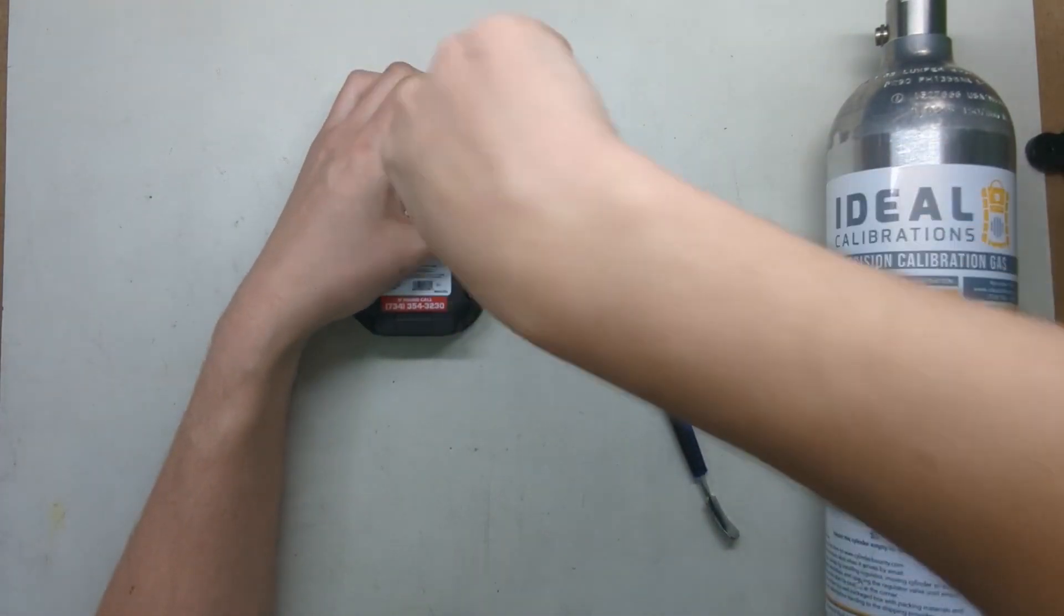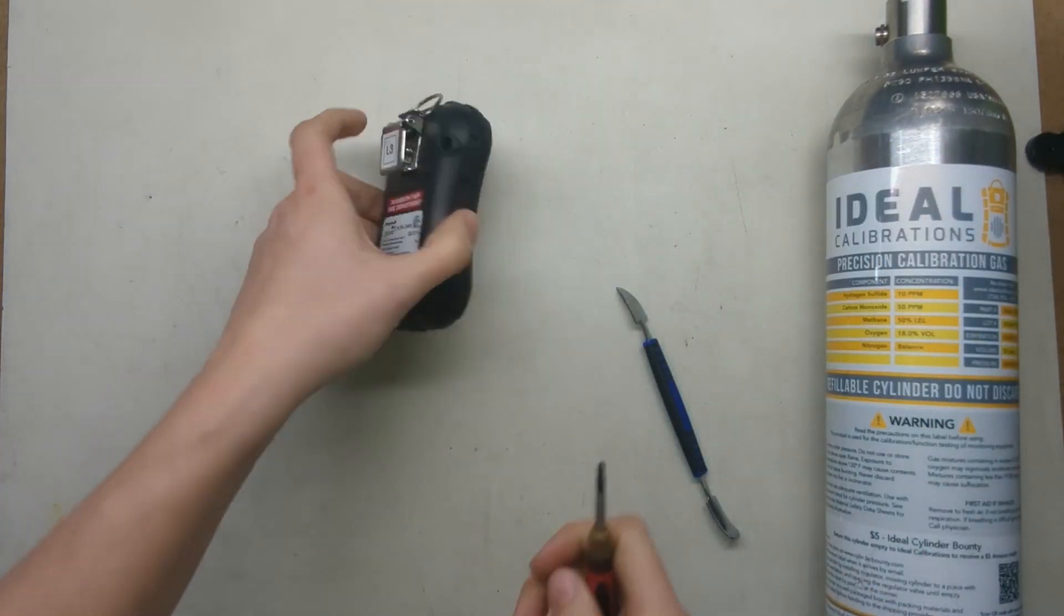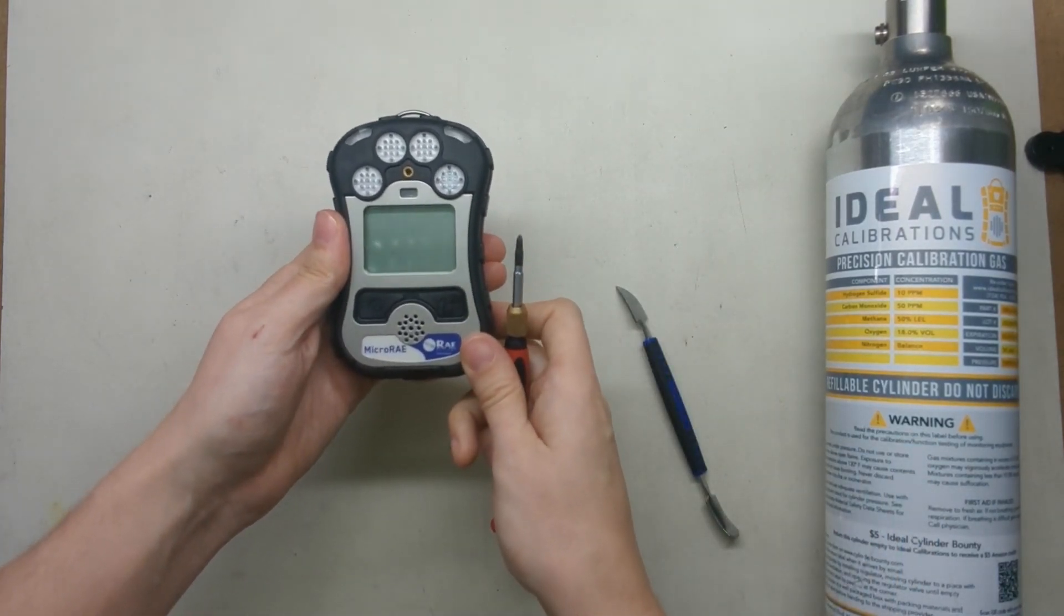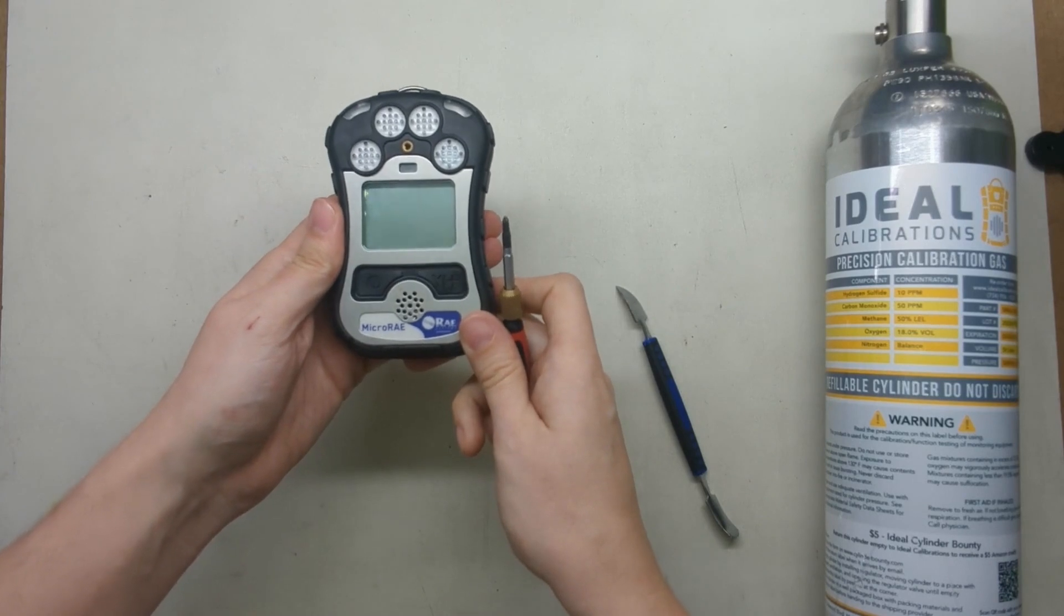And then afterwards you want to turn the unit on and you want to give it a good calibration. The cylinder of gas, make sure it's not expired. We'll show you how to do that in another video.